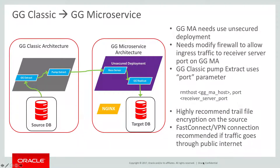Otherwise, if you do this through a secure deployment, the receiver server will require the SSL certificate to connect, which will not work. To make sure this unsecured deployment works, you can have an nginx reverse proxy server running that can still use SSL. This is actually the architecture of the marketplace Golden Gate deployment — nginx uses SSL, but the underlying deployment is unsecured — so the unsecured deployment enables the pump extract to communicate directly with the receiver server.